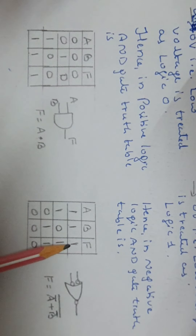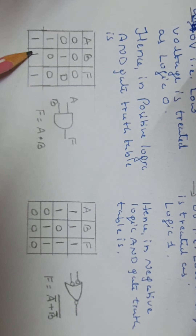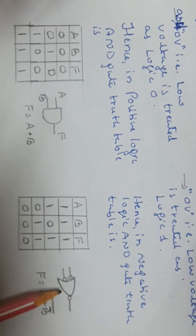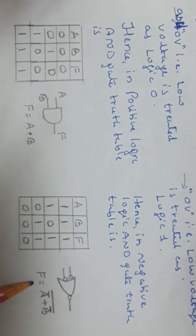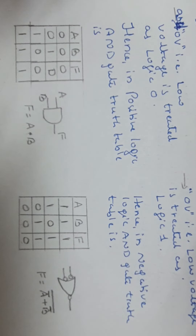The output is logic 1 only when both the inputs are logic 1. In the truth table of AND gate in negative logic, when both are low the output is low; when any one is low the output is low; the output is high only when both inputs are high. Here logic 0 represents high voltage, whereas in positive logic, logic 1 represents high voltage. The Boolean equation for AND gate in negative logic is F equal to A bar OR B bar, whole bar. That is the solution of question 1A for 5 marks.